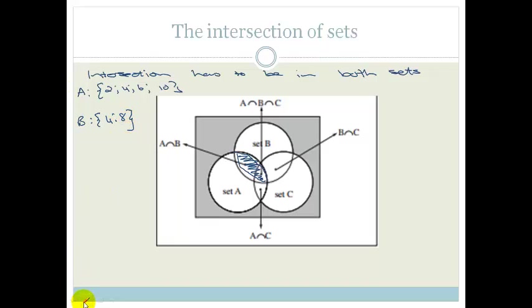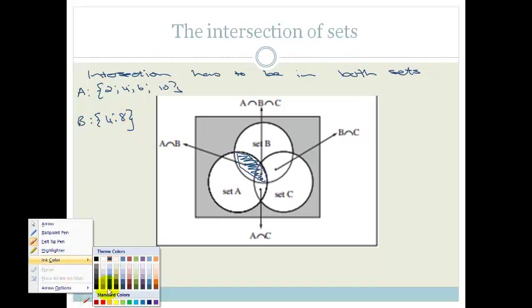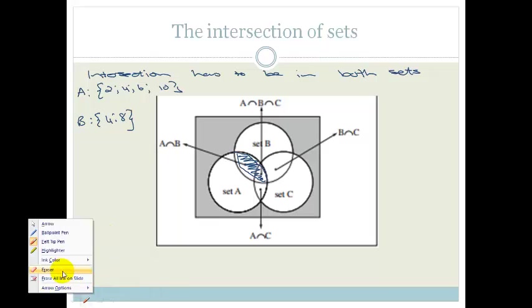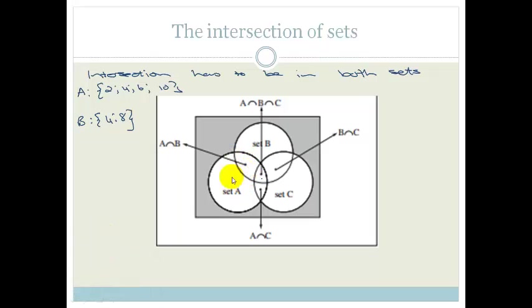Let me just erase this quickly. If I had to erase that, and I make B my set of 4, 8. But you see that 4 is in both the A and the B. So, I put my 4 here, and then my A would be just what's left, which is 2, 6, and 10,